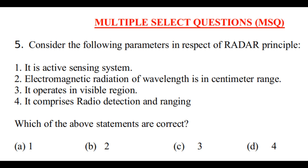Now let us look at some multiple select questions. From GATE 2021, multiple select questions have been introduced. Question 5: Consider the following parameters in respect of the radar principle. Statement 1: it is an active sensing system. Statement 2: electromagnetic radiation of wavelength is in centimeter range. Statement 3: it operates in visible region. Statement 4: it comprises radio detection and ranging. Which of the above statements are correct?